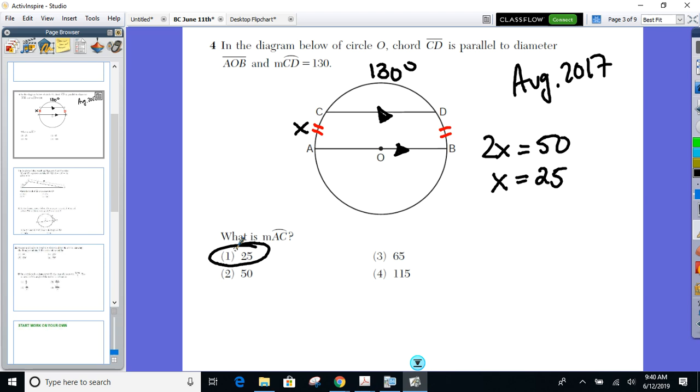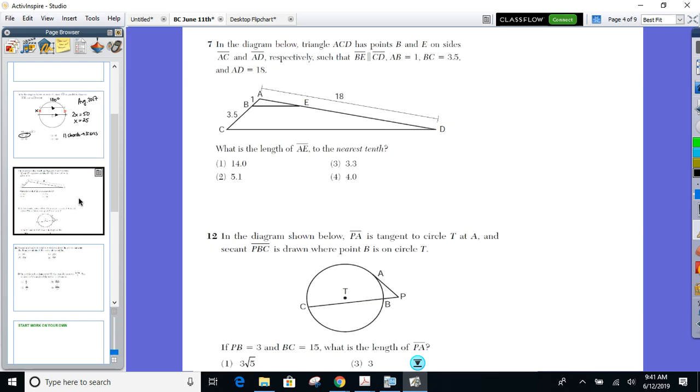Any questions there with four? John, go. I would say if you had to use the... Are you asking like if you wrote it in the reasons column? I would say parallel chords imply congruent arcs. If I needed to say these two arcs were congruent. Yep. Parallel chords imply congruent arcs. All right. Next up, kids. 7. Here we go.